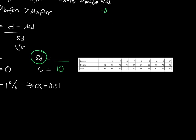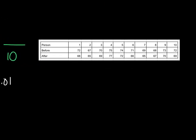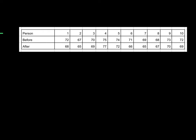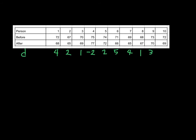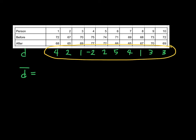To get d, d-bar, and sd, we use the data. For each pair, d is the difference: for example, 72 minus 68 is 4; 67 minus 65 is 2; then 1, negative 2, 2, 5, 4, 1, 3, and finally 3. D-bar is the average of these differences and sd is their standard deviation — we calculate both using a calculator.